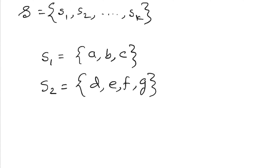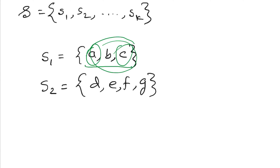Therefore all elements across all the sets in the disjoint set should be unique. We identify each set by a representative, which is a member of the set. In some applications it does not matter which member is used as the representative — all we need to ensure is that if we ask for the representative twice without modifying the set between the requests, we get the same answer. Other applications may require a specified rule such as returning the smallest or largest member, assuming the members can be ordered. But many times there might not be a way to order the members.